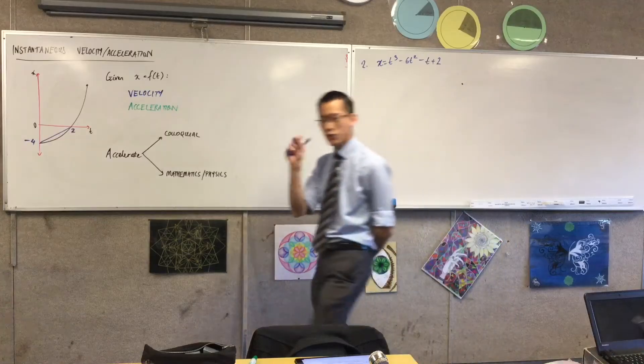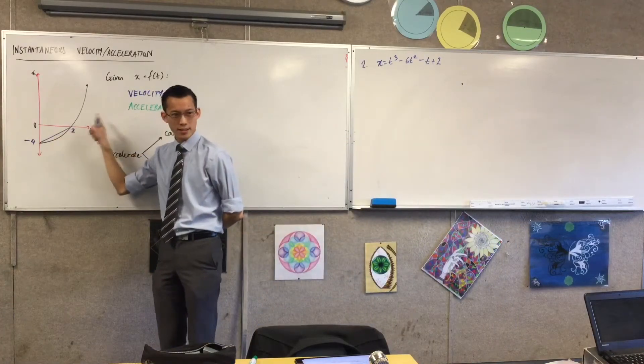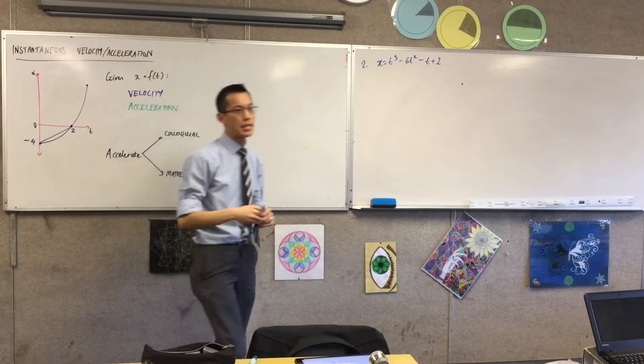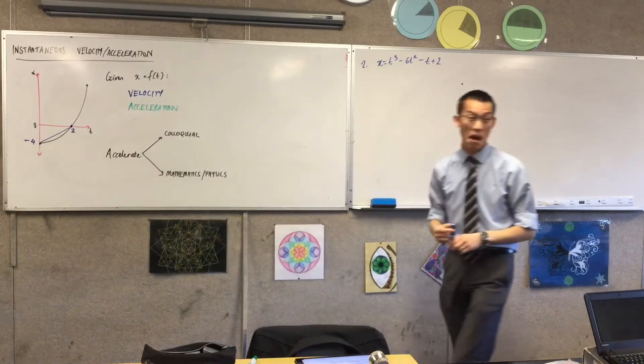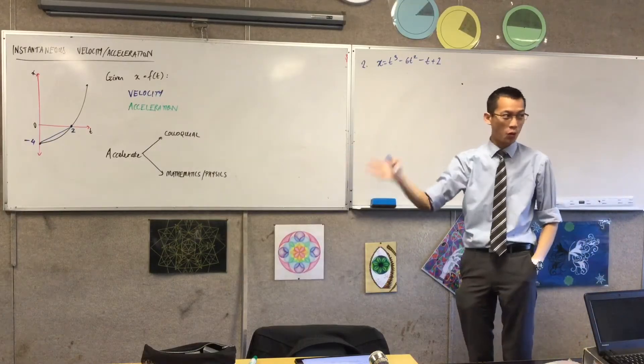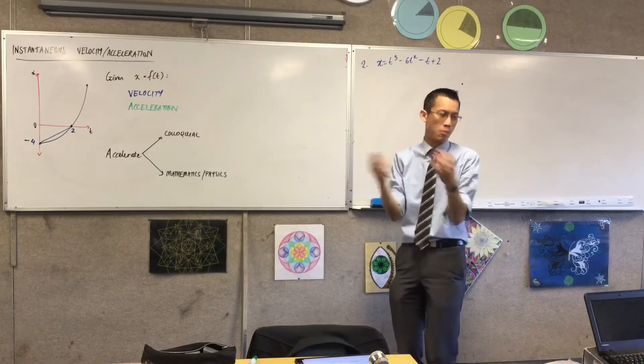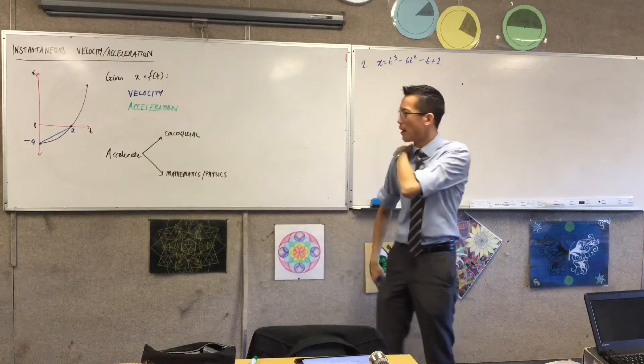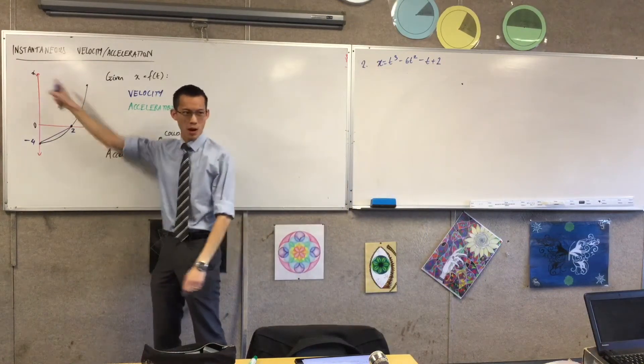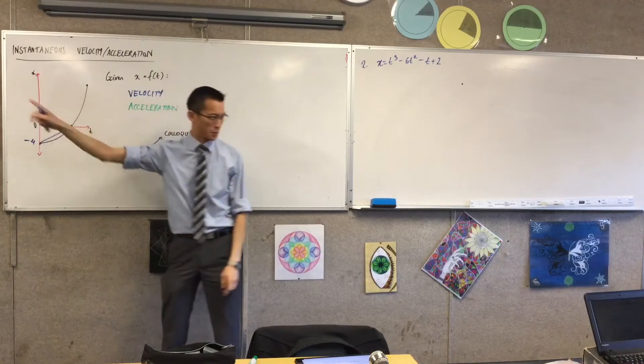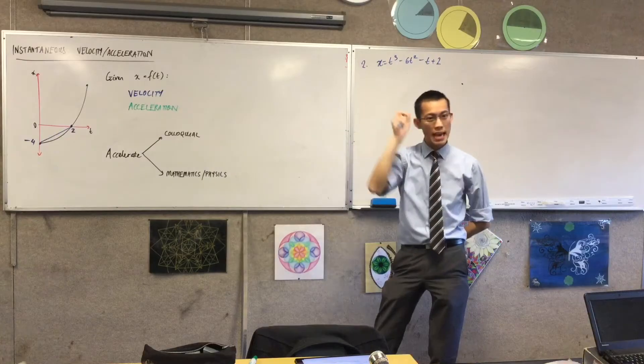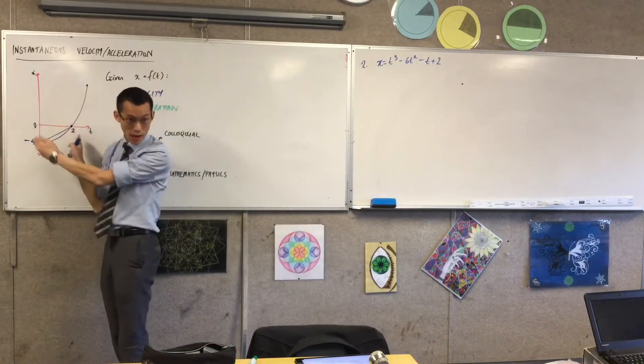Average velocity gives you the gradient of the chord between these two spots on the time displacement graph. By the way, just a minor note, this is a time displacement graph. You'll hear it called the displacement time graph sometimes, because the important feature about it is displacement. But we would usually say horizontal and vertical axis, like xy. So I call this time displacement.